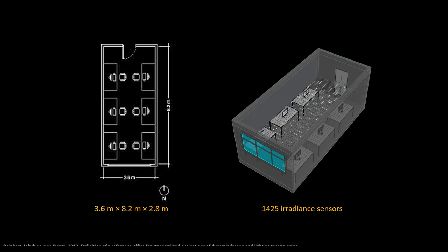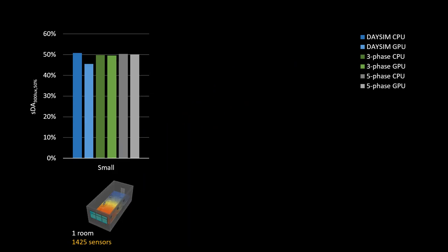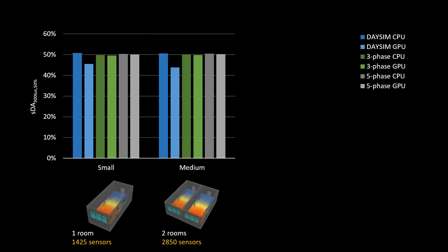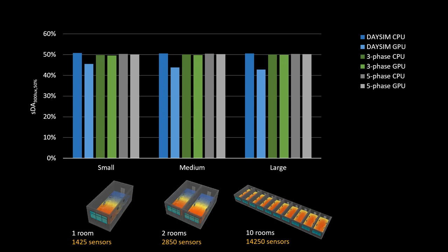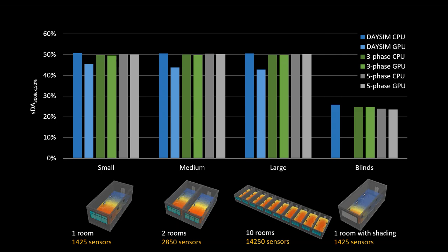I tested these methods using the reference office, a hypothetical space becoming a standard for daylight simulations. Results for spatial daylight autonomy all come in around 50%, within about half a percentage of each other—except for the DAYSIM-on-GPU calculation. Doubling the office size yields similarly consistent results. However, with blinds added to the window, DAYSIM on GPU calculated a spatial daylight autonomy of zero. This is because irradiance caching assumes fairly consistent diffuse lighting across a space, but blinds create high variation in diffuse lighting over small distances, causing artifacts that negatively affect results.